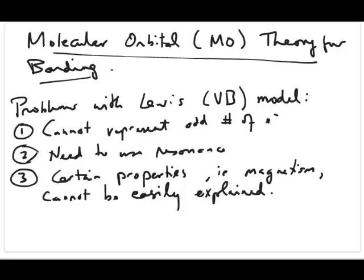The reason why we need to discuss this other model of bonding basically has to do with the fact that the model we've used so far, which is the Lewis model for bonding, has problems associated with it.